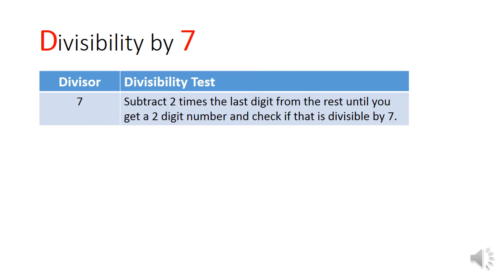Normally, these tests would be sufficient, but let me also cover the tests for weirder prime numbers such as 7 and 13. Hopefully, by walking you through the tests and the logic behind these tests, you can create your own tests for other prime numbers. For 7, the test is to subtract 2 times the last digit from the rest of the numbers until you can find a number small enough that you can check for divisibility by 7, usually a 1 to 2 digit number.